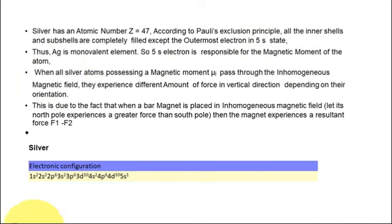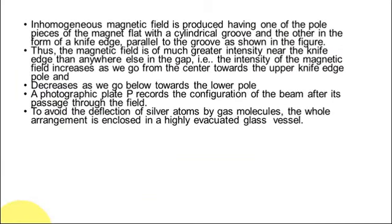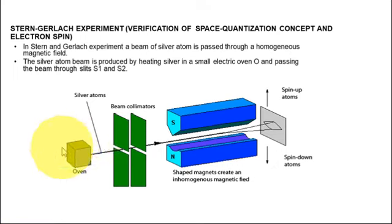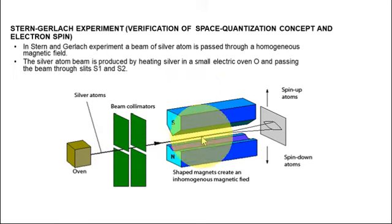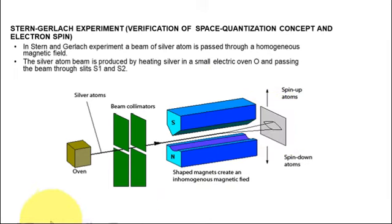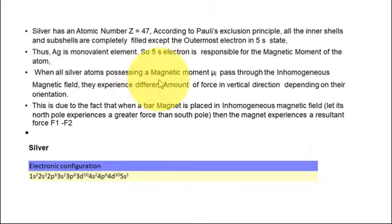We cannot take a single silver atom in the oven — there will be a large number of silver atoms taken in powdered form. When powdered silver is placed in the oven, the atoms pass through the slits and then through the inhomogeneous magnetic field. The beam is split into two parts, which verifies electron spin. The 5s electron is the main component responsible for the magnetic moment of the atom.